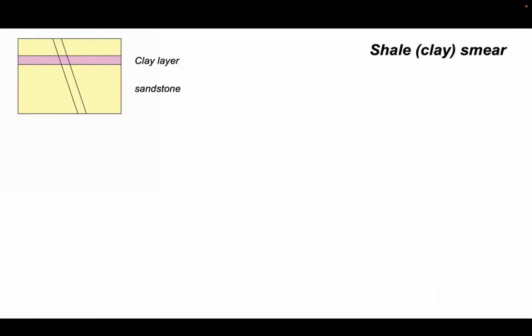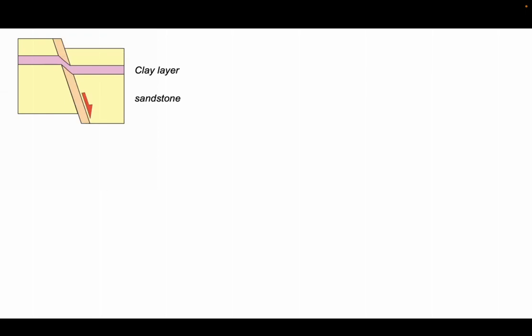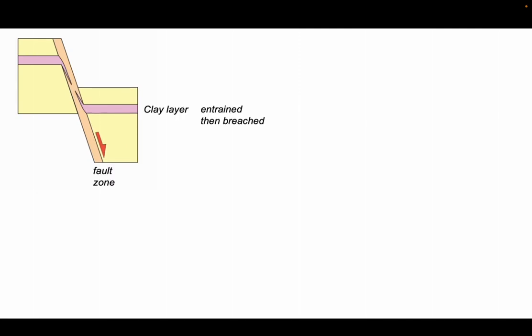We could start by looking at a very simple idea of clay or shale smear. Let's just consider the behavior on the left there. As we move the hanging wall down, the clay layer smears out into the fault zone. Let's continue the displacement - smearing continues like this, but eventually that shale layer going into the fault zone is likely to become attenuated out and breached. So we expect there to be a relationship between the throw on the fault or its displacement and the thickness of the clay layer as to whether that clay layer in the fault zone remains intact or not.